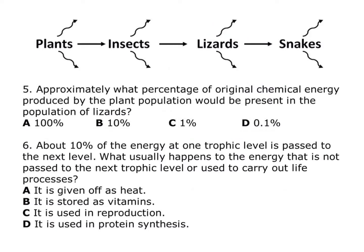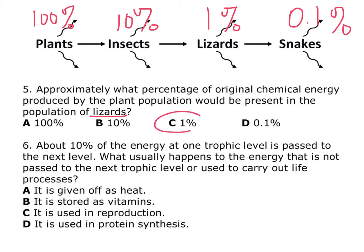Question 5: approximately what percentage of the original chemical energy produced by the plant population would be present in the population of lizards? There's 100% on the plants, 10% on the insects, then 1% on the lizards, and 0.1% on the snakes. They asked about the lizards, so the answer is 1%. This final question is about making sure you understand the concept: about 10% of the energy at one trophic level is passed to the next level. What usually happens to the energy that is not passed to the next trophic level or used to carry out life processes? The squiggly arrows coming off either side of these organisms represent the heat that is given off. Only 10% of the energy goes on to the next level — much of the 90% that doesn't make it to the next level is lost to the environment as heat.